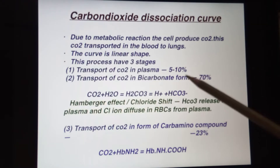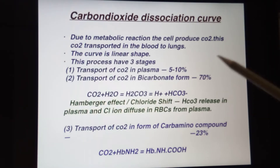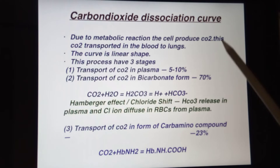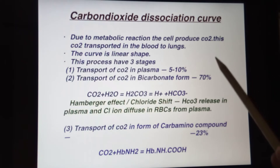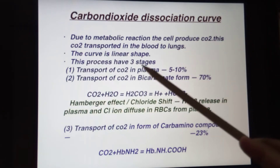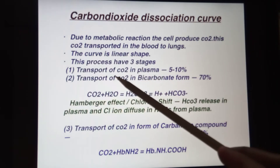Due to metabolic reactions, the cell produces carbon dioxide, which is transported in the blood to the lungs. In the cell, glucose combines with oxygen to make ATP, produce energy, and also produce an acidic gas called CO2, which is not important for our body, so we have to release it from our body.